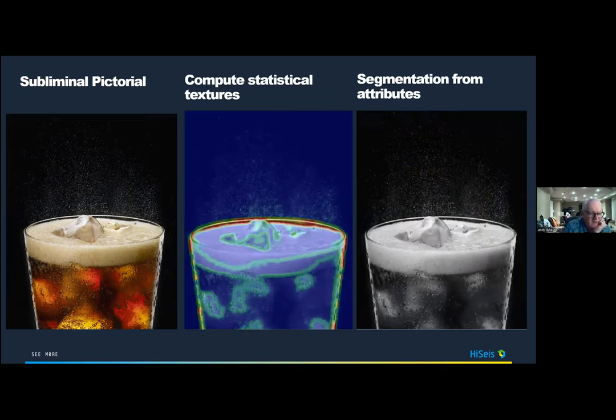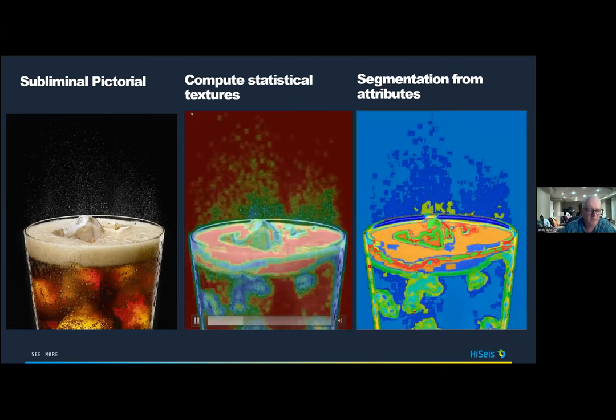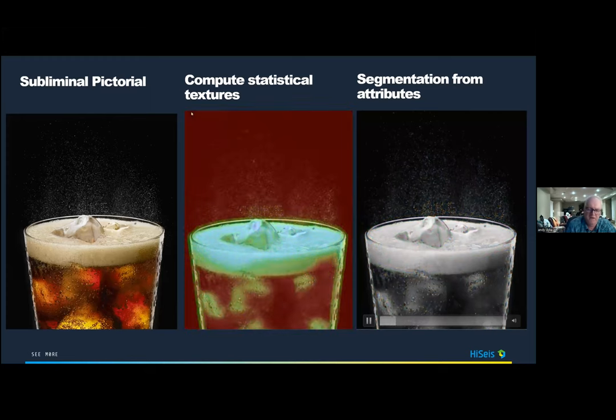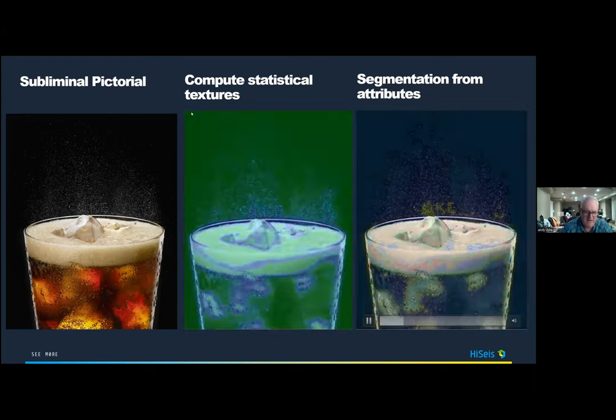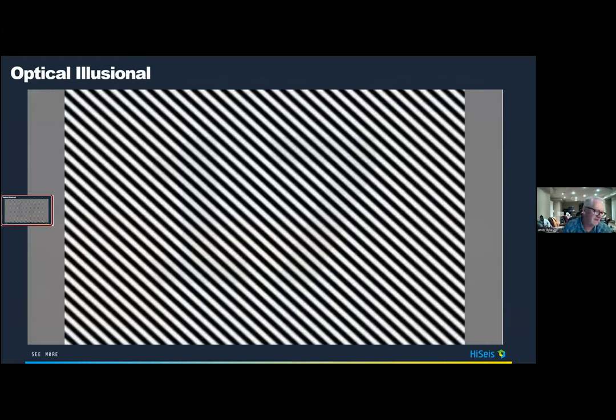Here's a simplistic pictorial of computing statistical textures and attributes from a single image. Once you have all those attribute volumes you can segment them and combine them to see what they really mean. An interesting demonstration: within an image that looks like noise, data is embedded that you don't pick up with the naked eye — the further away you get the more you can see it. The same applies to noisy-looking seismic sections where something is present that you don't see with the naked eye.